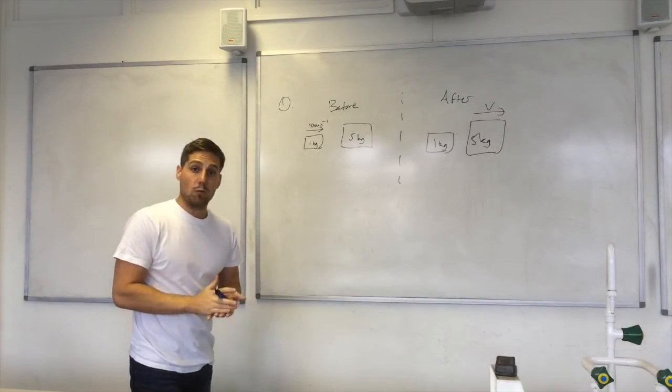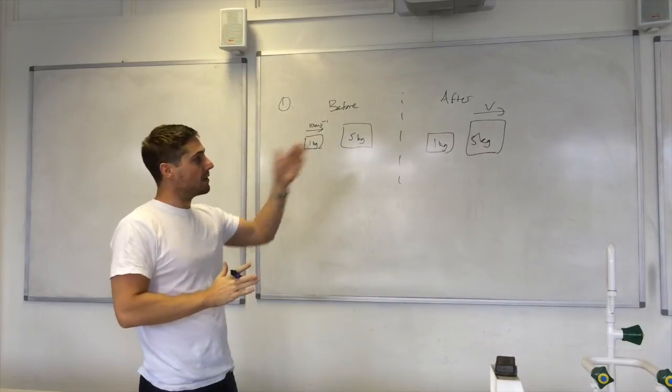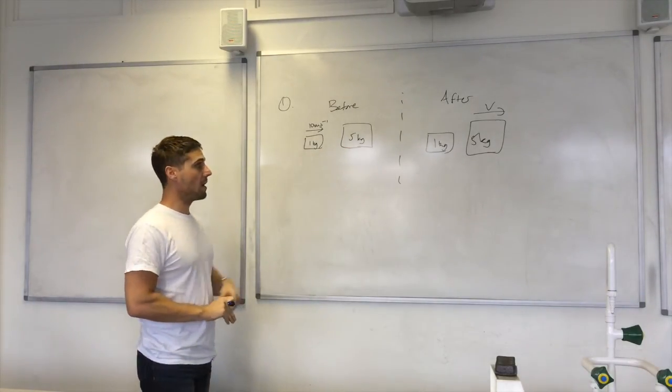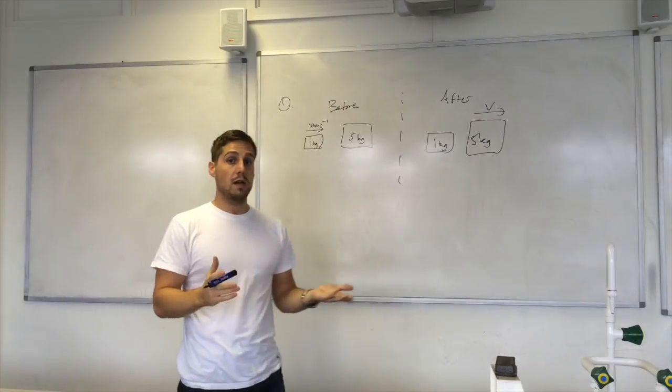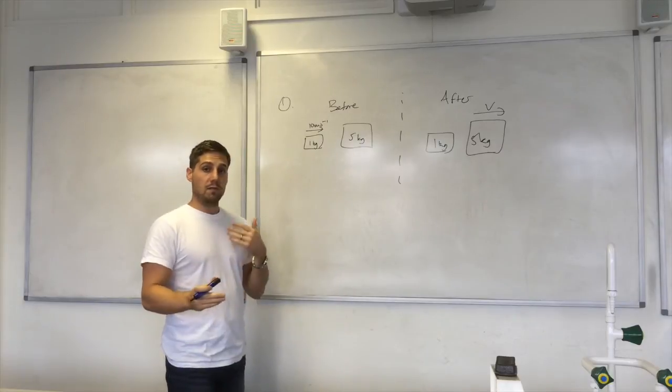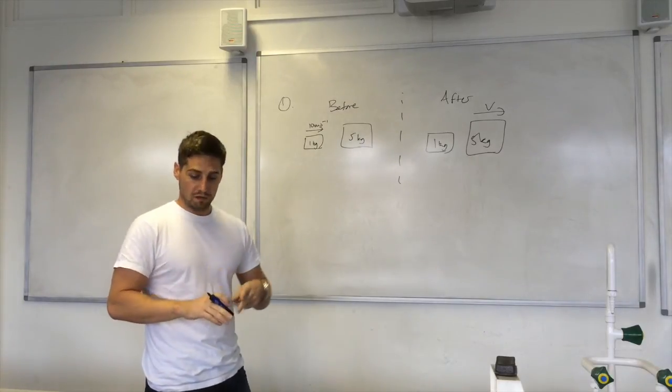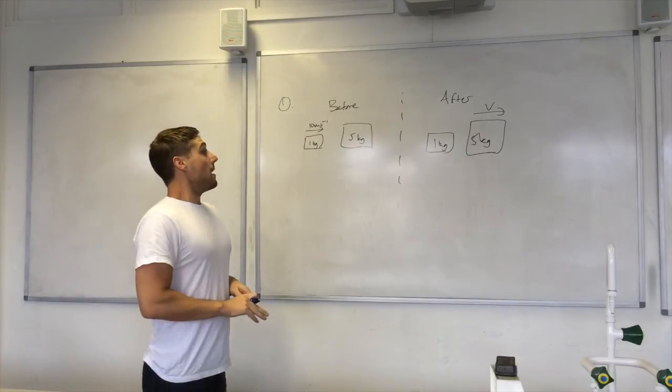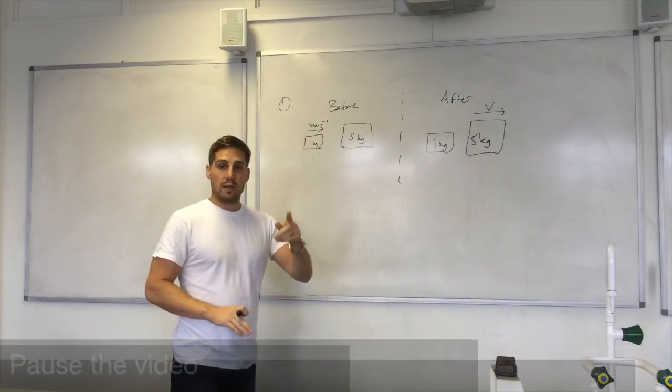And the five kilogram mass moves off at some velocity v. So what we want to do is find out what that velocity is. What velocity does the five kg mass move off at? I've drawn the vector to the right but it may not necessarily be to the right in other situations. You always have to be careful about your positives and negatives but I'll say more about that in a moment. Okay, if you can solve that, go ahead and solve it now.